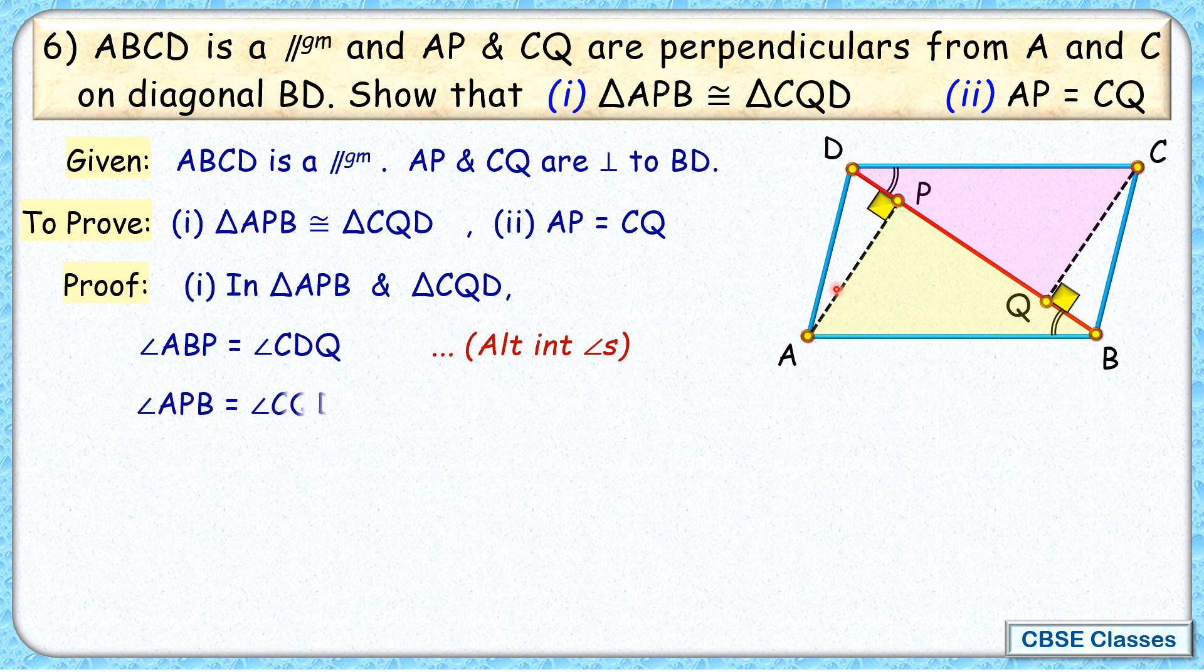Second, by construction, angle APB and angle CQD are equal. Why? Because they are 90 degrees each and it's given to us.